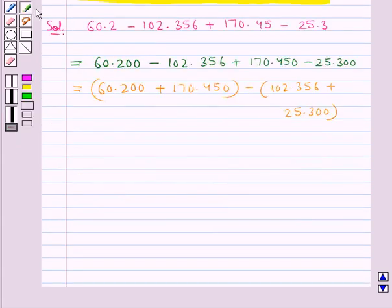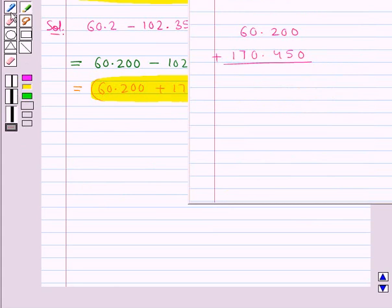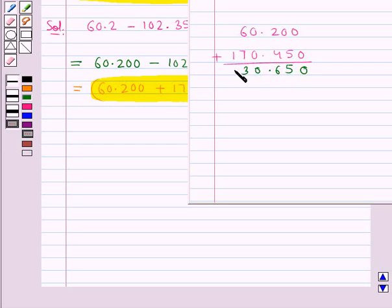First we shall add both these decimal numbers. So on adding these two decimal numbers we get 230.650.